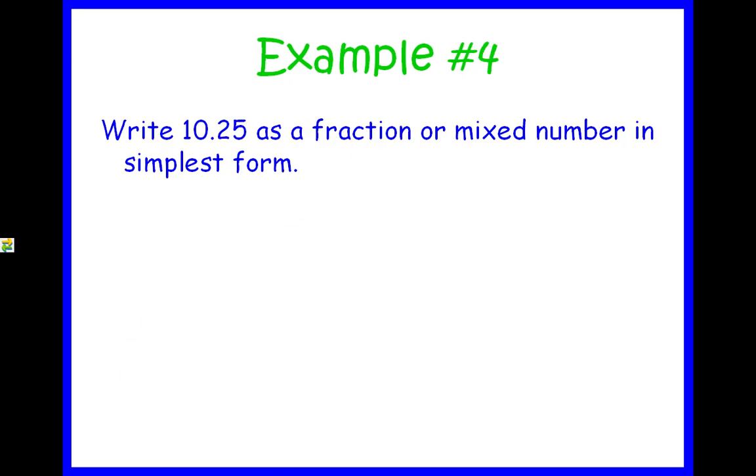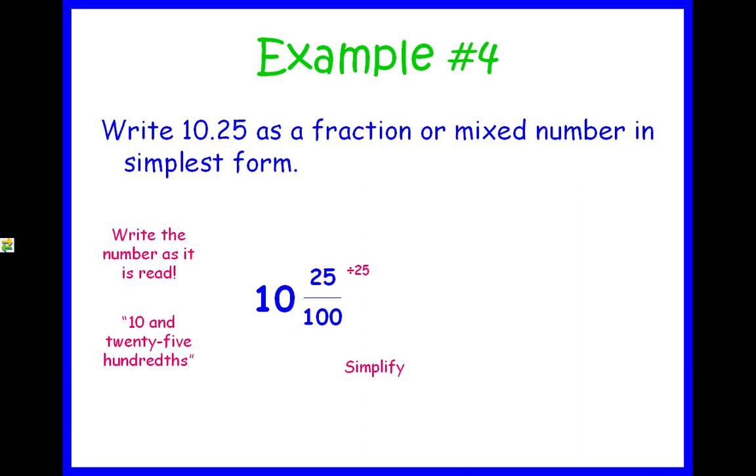Let's do another one, a mixed number. We're going to write 10.25 as a fraction or mixed number in simplest form. The proper way to say this would be, we're going to write the number as it is read, 10 and 25 hundredths, because that is the hundredth spot. So you would write it, the 10, if it's before the decimal, that's our mixed number, 10 and 25 hundredths, just as it's read. Now, here we have to simplify. We can divide by 25 on the top and the bottom. That would give us 10 and one-fourths. That is the simplified way to write that decimal.